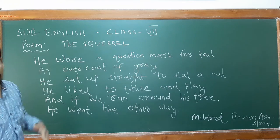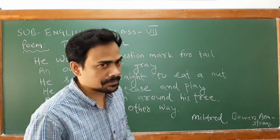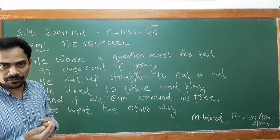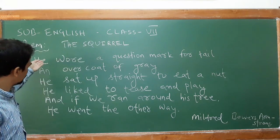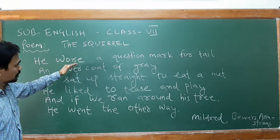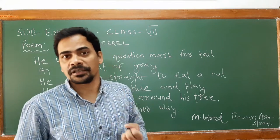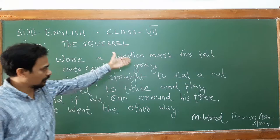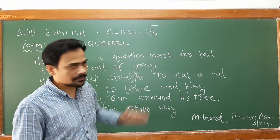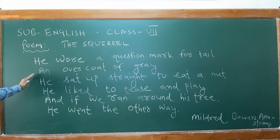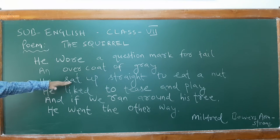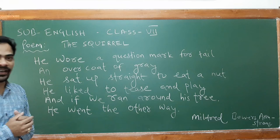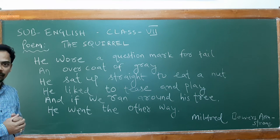Now, 'a coat of gray' — what is the meaning of this second line? Is the squirrel really wearing a coat made of gray color? That interpretation is absolutely wrong. The poet is talking about the body of the squirrel — the coat itself looks gray, meaning the complexion or fur of the squirrel is gray. In the third line, he sits up straight to eat a nut, sitting upright on the ground.